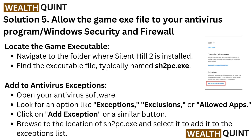Solution 5: Add the game executable to your antivirus program or Windows Security exclusions. Navigate to the folder where Silent Hill 2 is installed and find the executable file, typically named sh2pc.exe. Open your antivirus software and look for an option like Exceptions, Exclusions, or Allowed Apps. Click Add Exception, browse to the location of sh2pc.exe, and select it to add it to the Exceptions list.